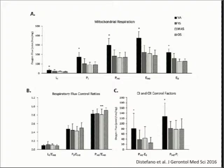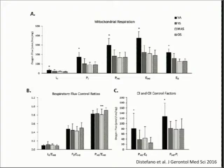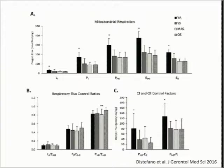This is true for some of the respiratory flux control ratios as well. The ratio between maximal coupled respiration and basal respiration is almost like a respiratory reserve capacity. The key point is there is really no age association in mitochondrial respiration in muscle — it's really driven by physical activity.